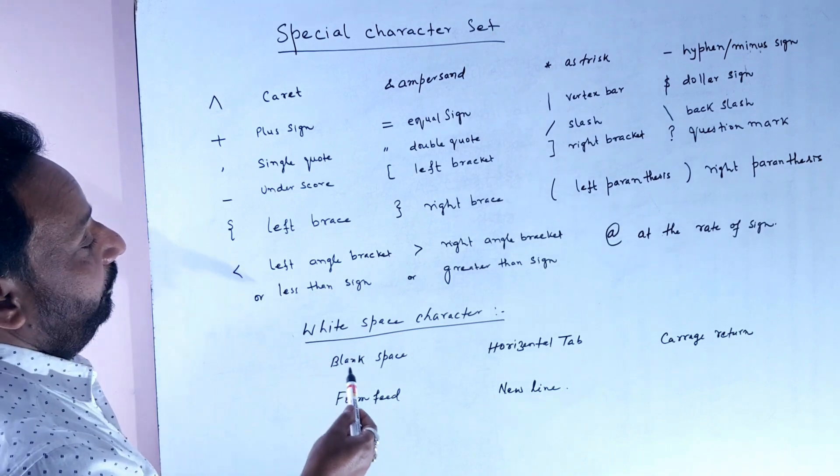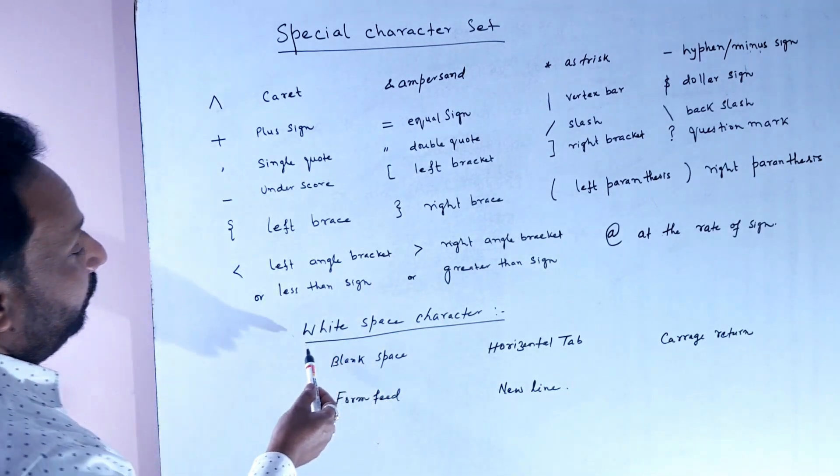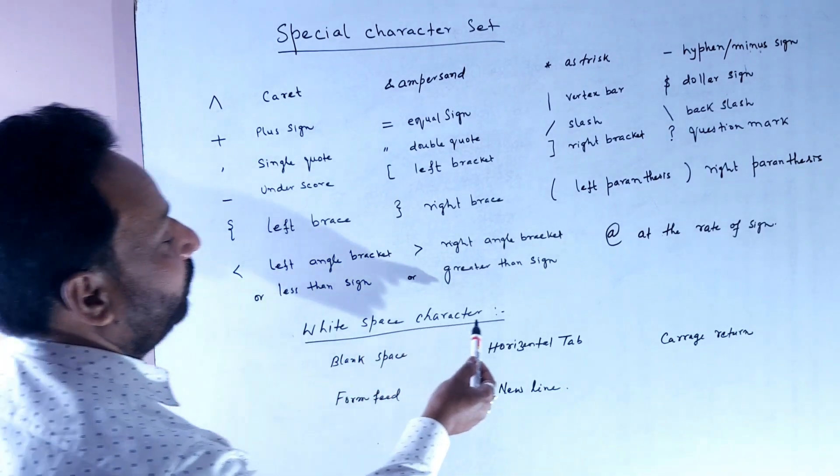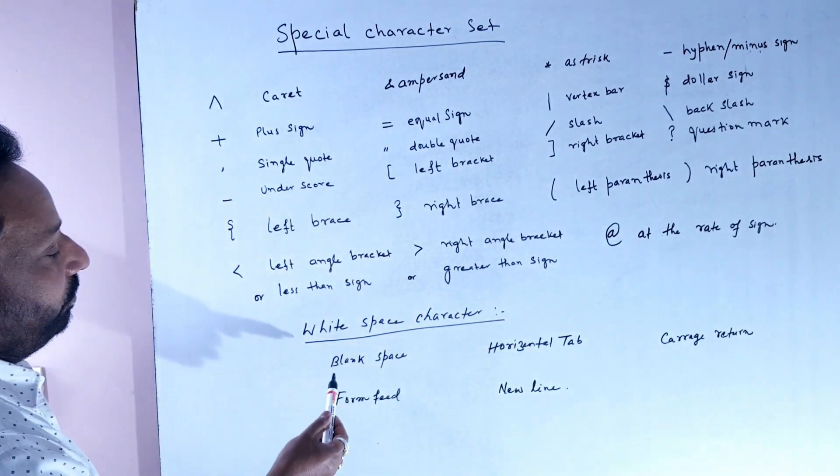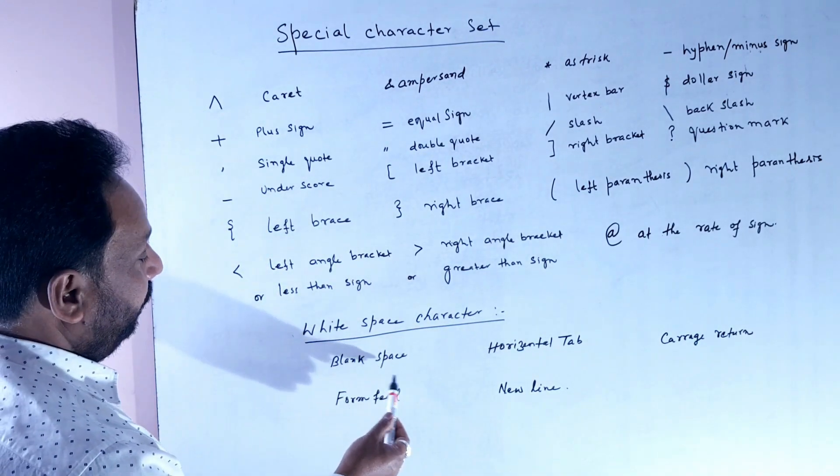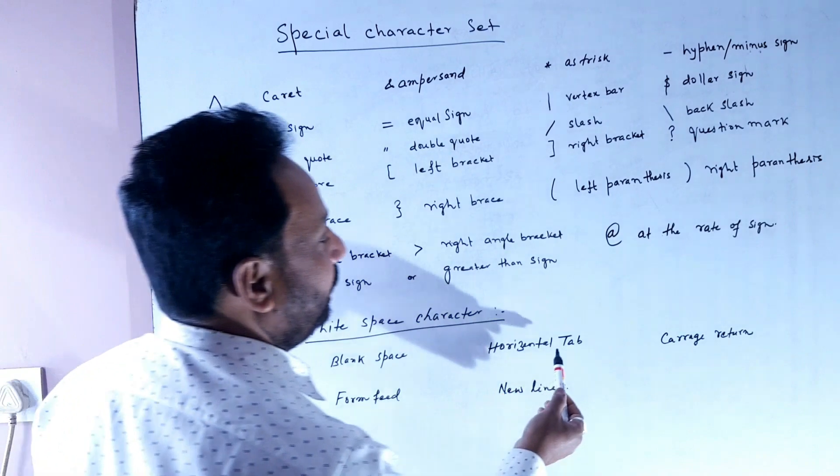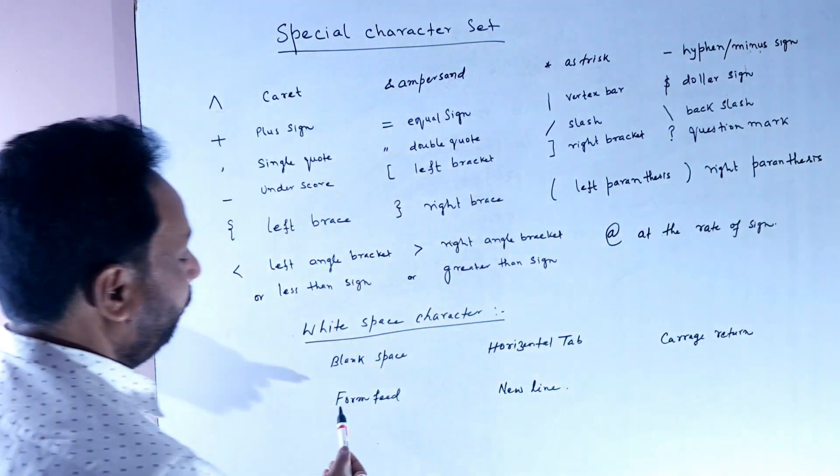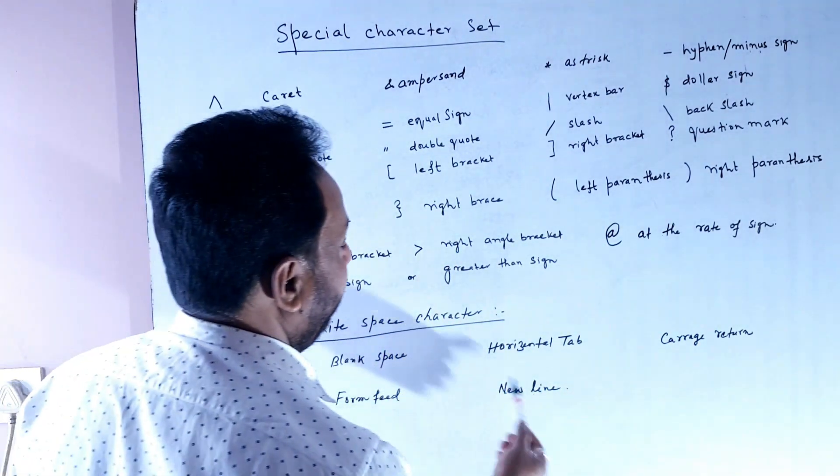In C, white space characters are also used, which include blank space, horizontal tab, carriage return, form feed, and new line.